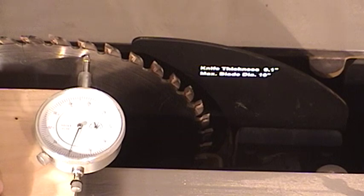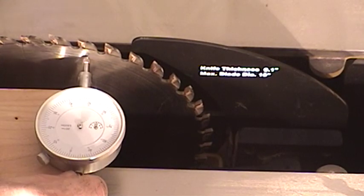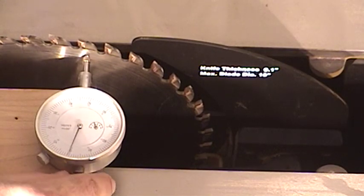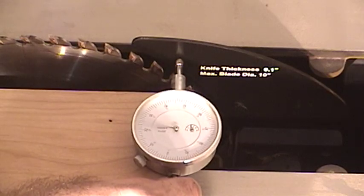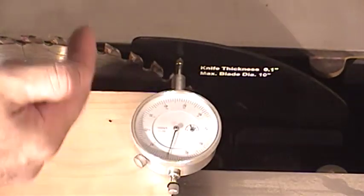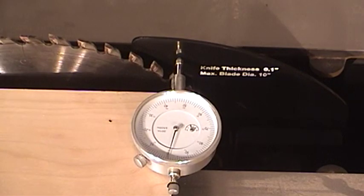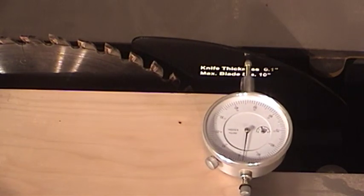Okay so after adjusting this for a little while I finally got the alignment pretty good. If I zero the dial indicator on the blade again and move the dial indicator to the front of the riving knife, it's off by one thou in this direction.